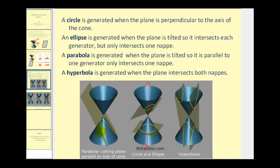On the left, we see the parabola. This is generated when the plane is tilted so it is parallel to one generator and only intersects one of the napes. We could also say that it's parallel to one side of the cone. And then lastly, on the right, a hyperbola is generated when the plane intersects both napes.